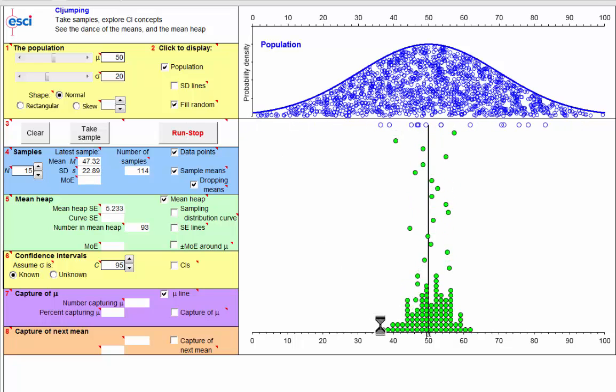So here we have, down at the bottom here, the sampling distribution of the sample mean. The empirical sampling distribution of the sample mean, meaning it's what we got on this particular run. If we did it again, we'd get a slightly different shape.